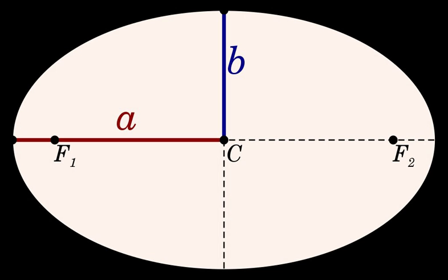A parabola can be obtained as the limit of a sequence of ellipses where one focus is kept fixed as the other is allowed to move arbitrarily far away in one direction, keeping l fixed. Thus a and b tend to infinity, a faster than b.